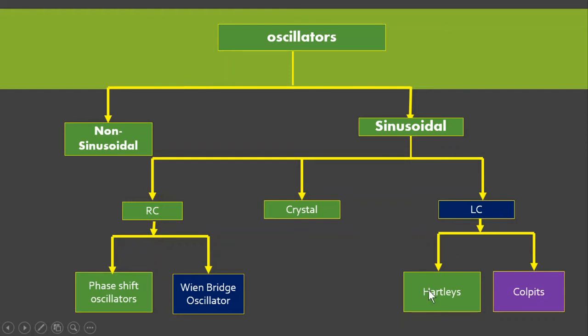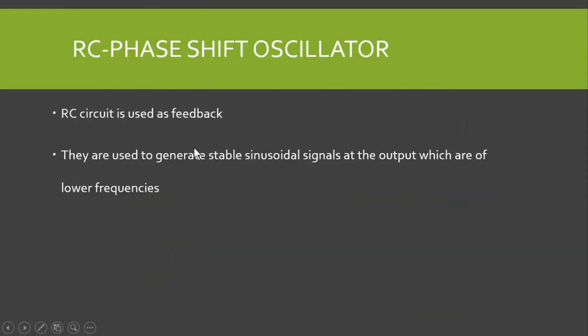In the RC phase shift oscillator, an RC circuit is used as a feedback network. They are used to generate stable sinusoidal signals at the output, which are of low frequency — typically hundreds of kilohertz.